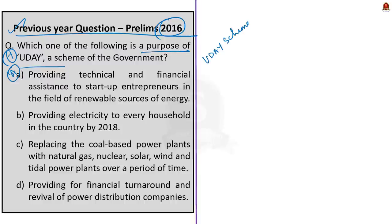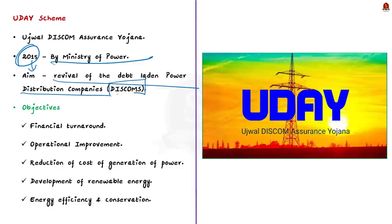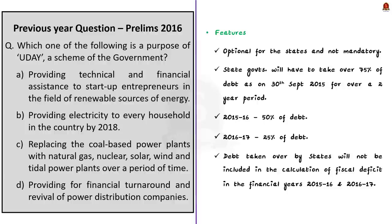Ujwal Discom Assurance Yojana, shortly known as UDAY, is a scheme introduced by the Ministry of Power in 2015 for the revival of debt-laden power distribution companies, known as Discoms. Apart from this, this scheme also envisages financial turnaround, operational improvement, and reduction of cost of generation of power. It also strives for development of renewable energy and energy efficiency and conservation. So the correct answer here is option D — providing for financial turnaround and revival of power distribution companies.